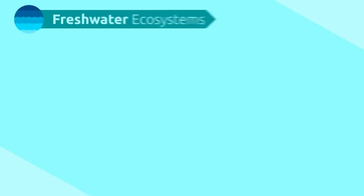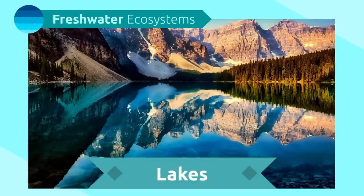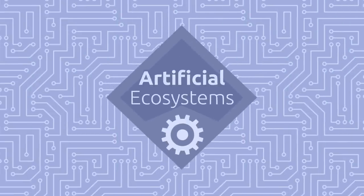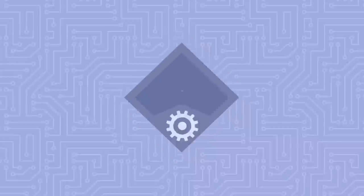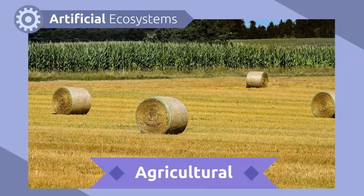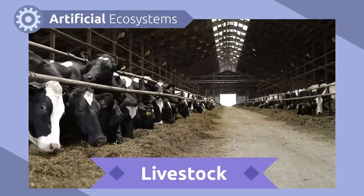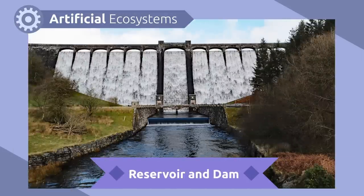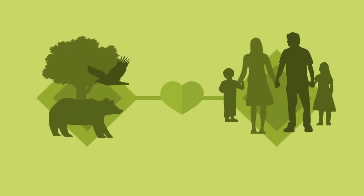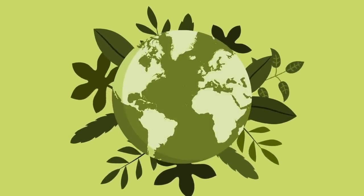Terrestrial ecosystems include deserts, jungles, woodlands, tundras, taigas, grasslands, and savannas. Marine ecosystems include freshwater ecosystems like rivers and lakes, and saltwater ecosystems like seas and oceans. Artificial ecosystems are areas created by humans that cannot be found in nature, like urban ecosystems, agricultural ecosystems, livestock ecosystems, and reservoir and dam ecosystems. The interaction among living beings and the environment is very important — help look after the environment to preserve the huge diversity of natural ecosystems.